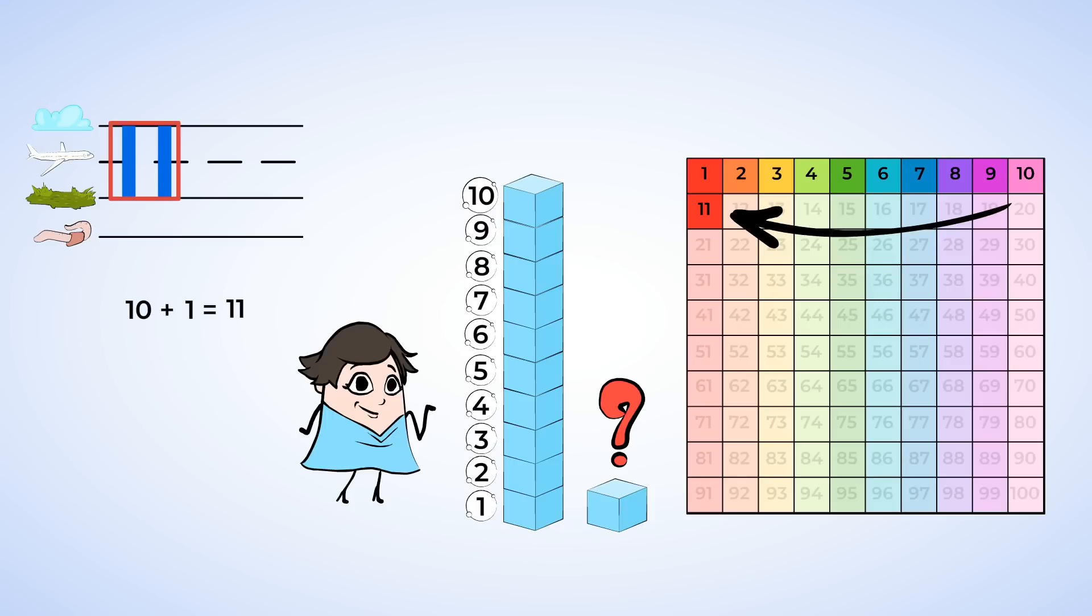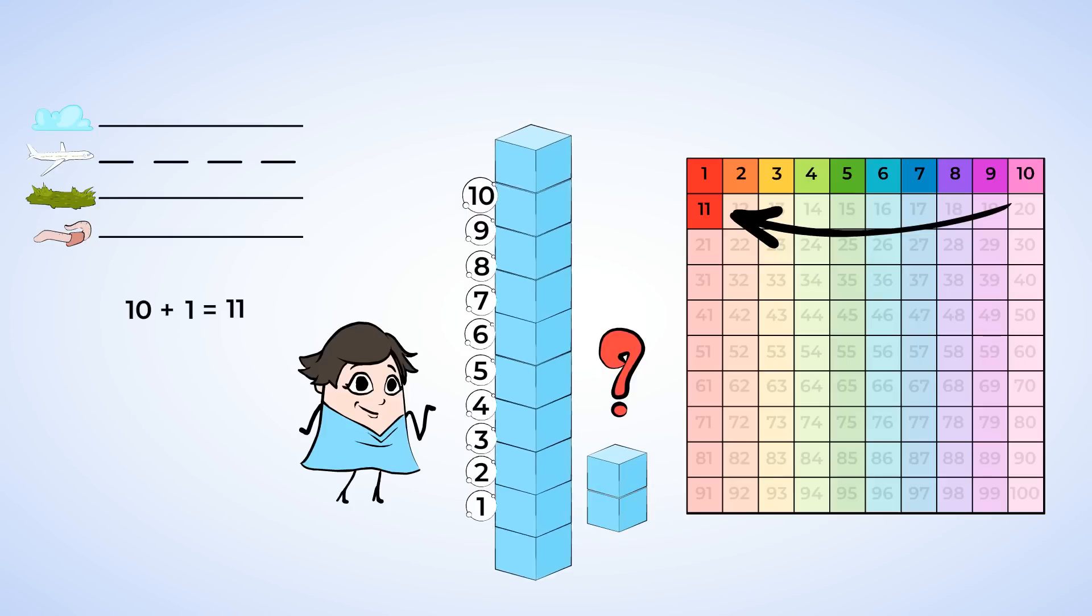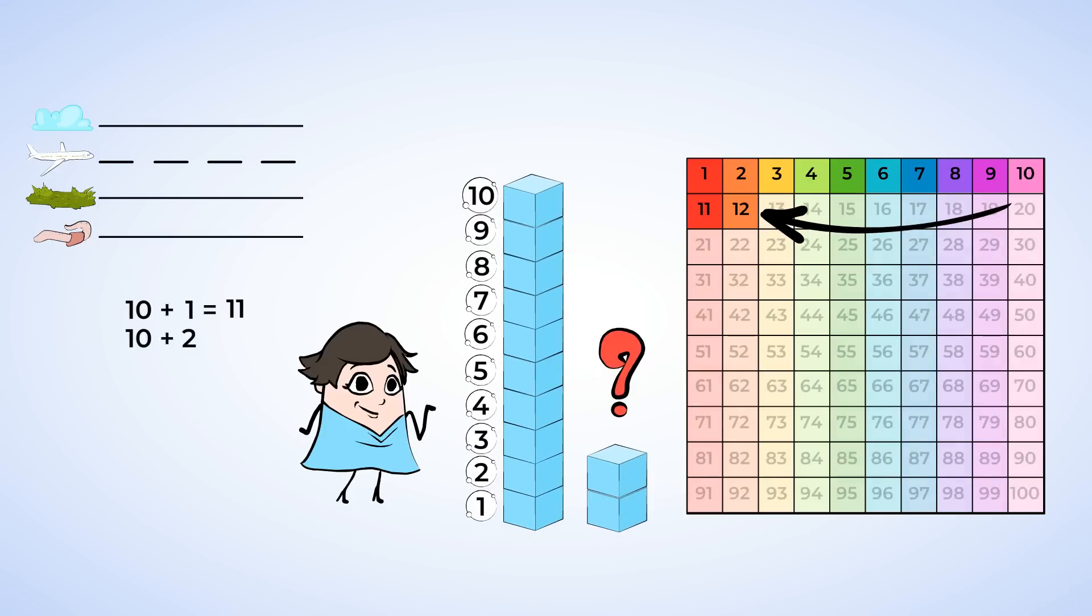So we just figured out what 10 and 1 more is. 11. But what would happen if we added another block? Now we have 10 and 2 more. We have the number 1 again and the number 2. Around the back, 2's on track. And there we go. So we have the number with 1 and 2 on it. And that's how we write 12. 12 is 10 and 2 more. 10 and 2 make 12. Great. So Mia now has 12 blocks.